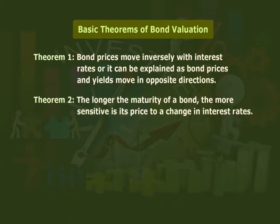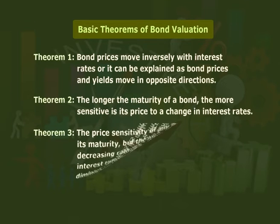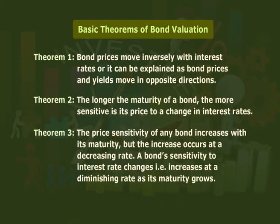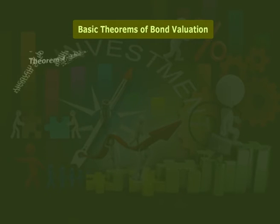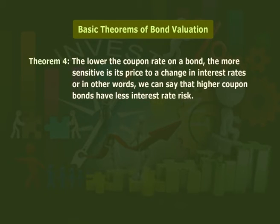Theorem two: the longer the maturity of a bond, the more sensitive is its price to a change in interest rates. Theorem three: the price sensitivity of any bond increases with its maturity, but the increase occurs at a decreasing rate. A bond's sensitivity to interest rate changes increases at a decreasing rate as its maturity grows.